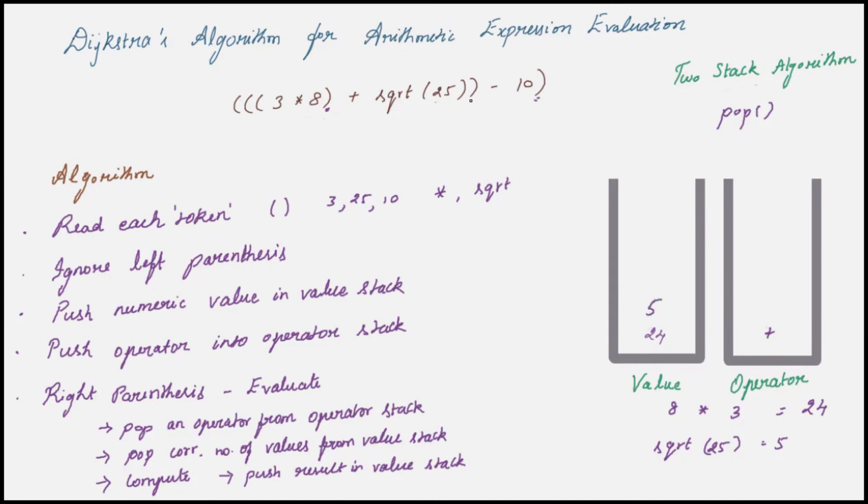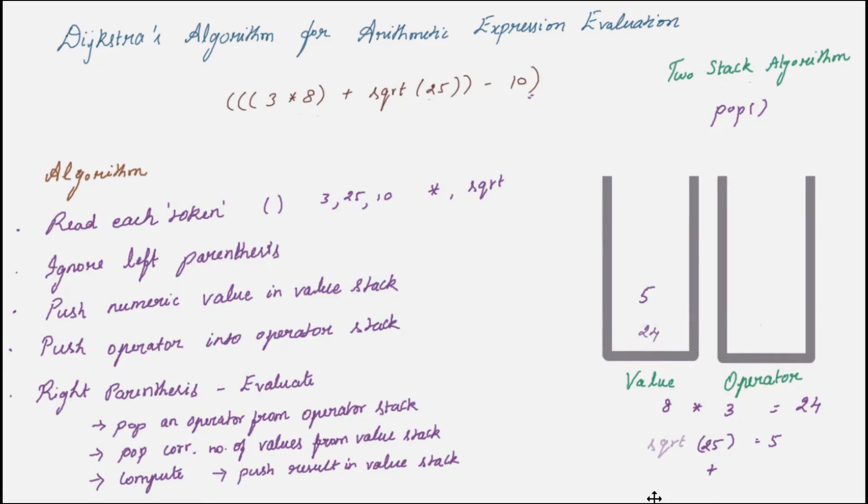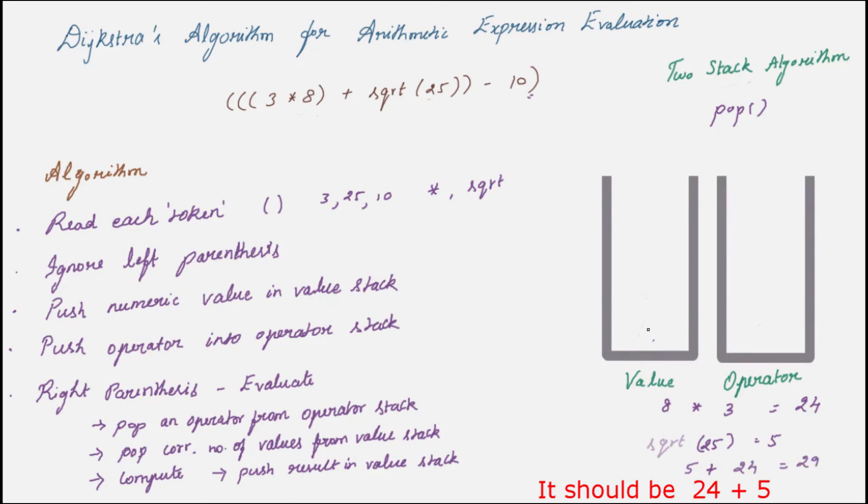The next token is again a right parenthesis. So you have to perform one more evaluation. Again pop an operator. For addition you need two values. So pop two numbers from the value stack. The result is 29. Push that into the value stack.